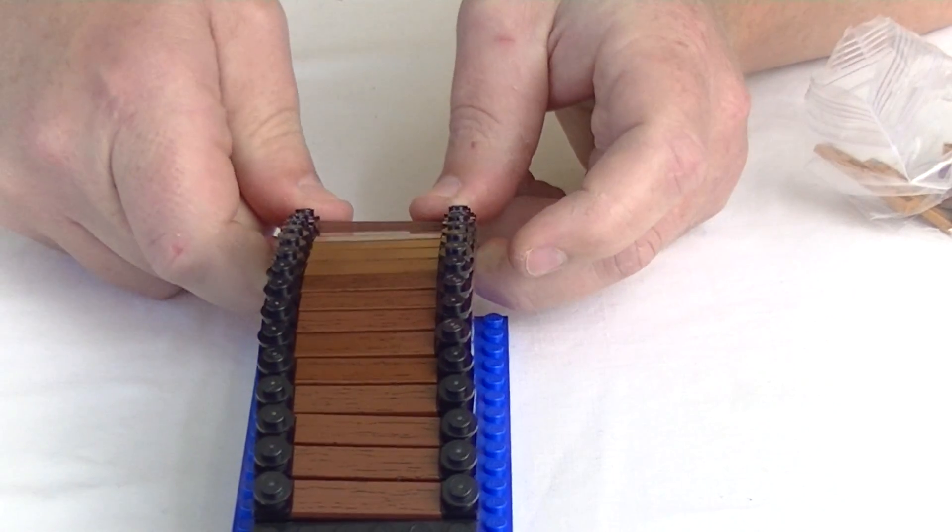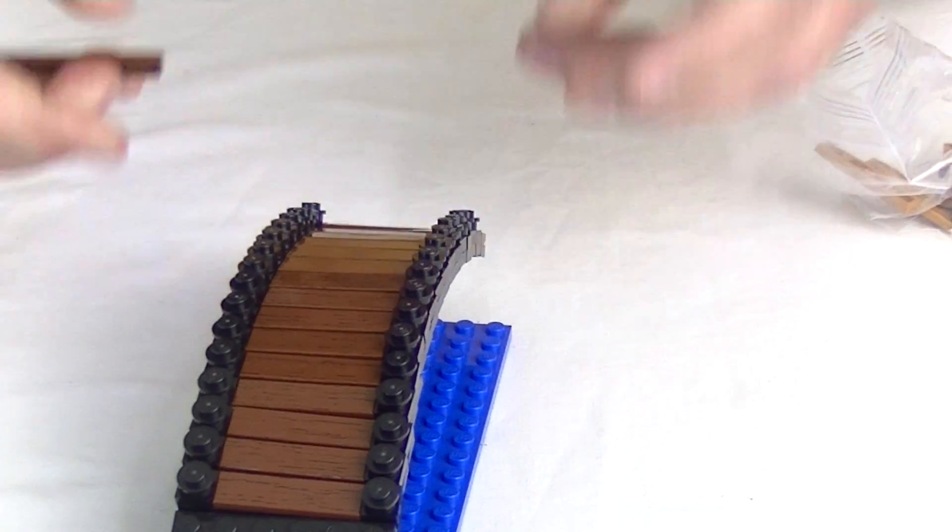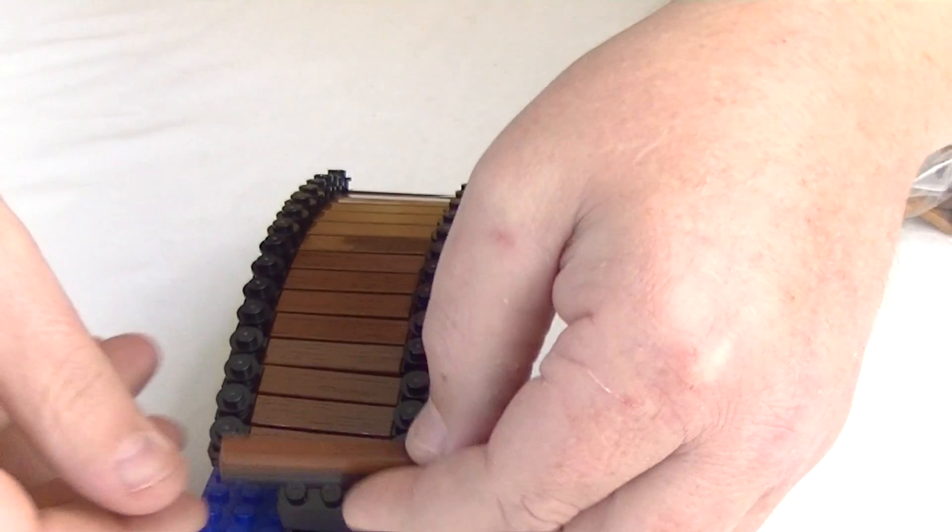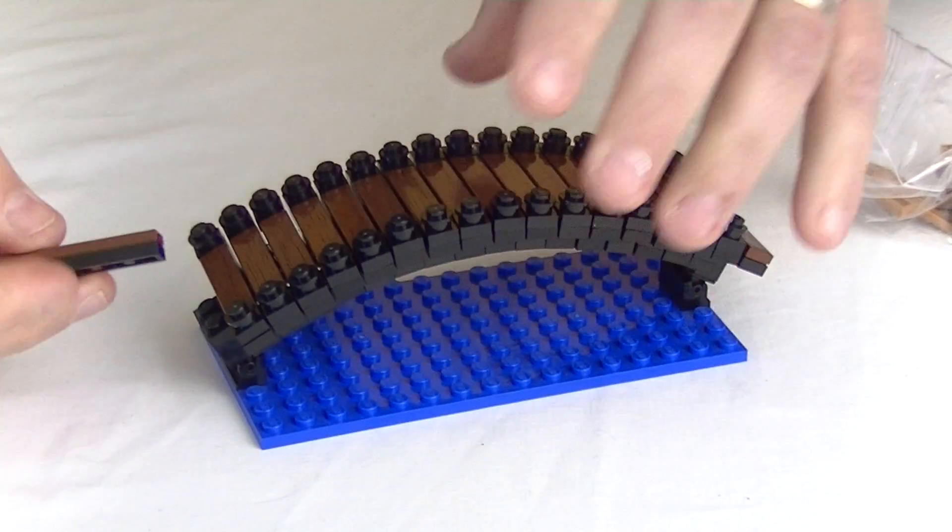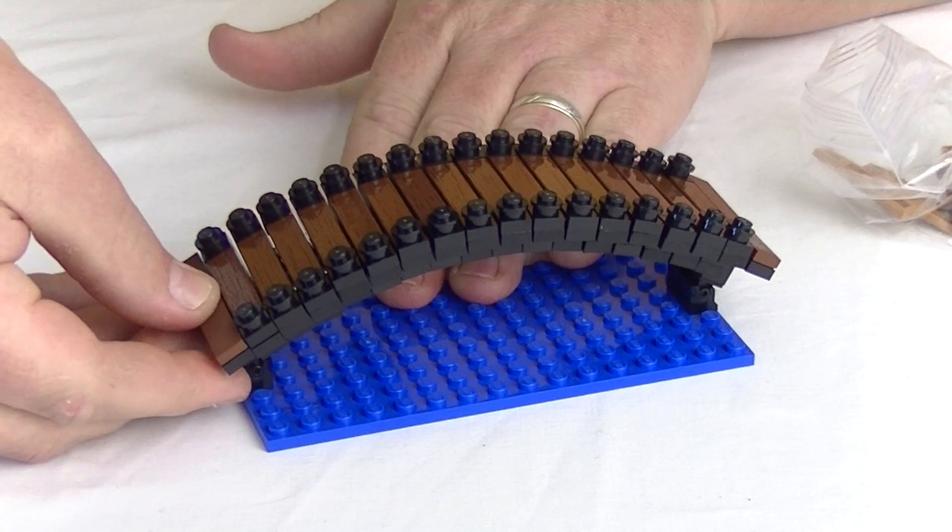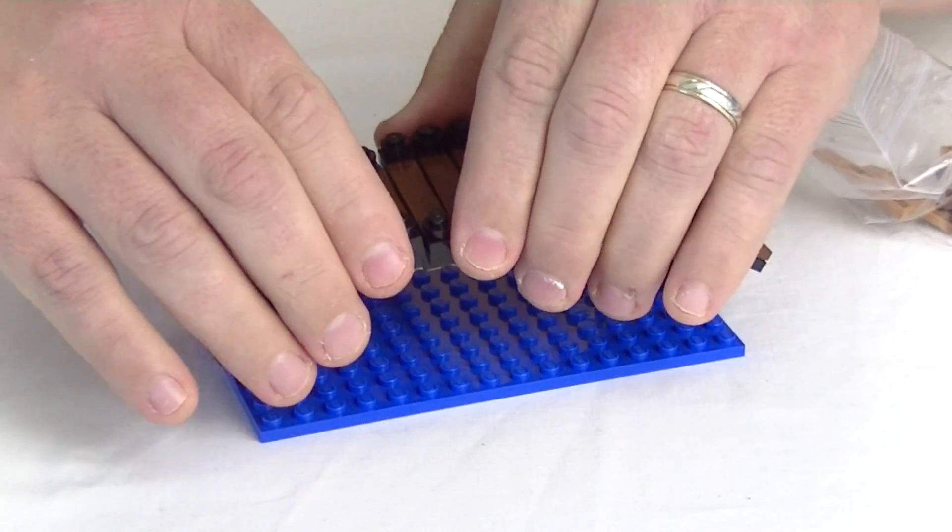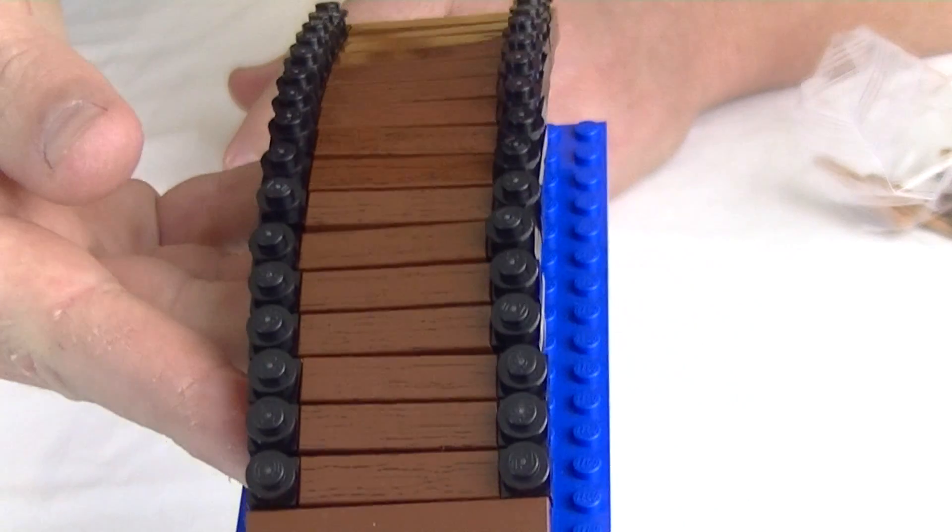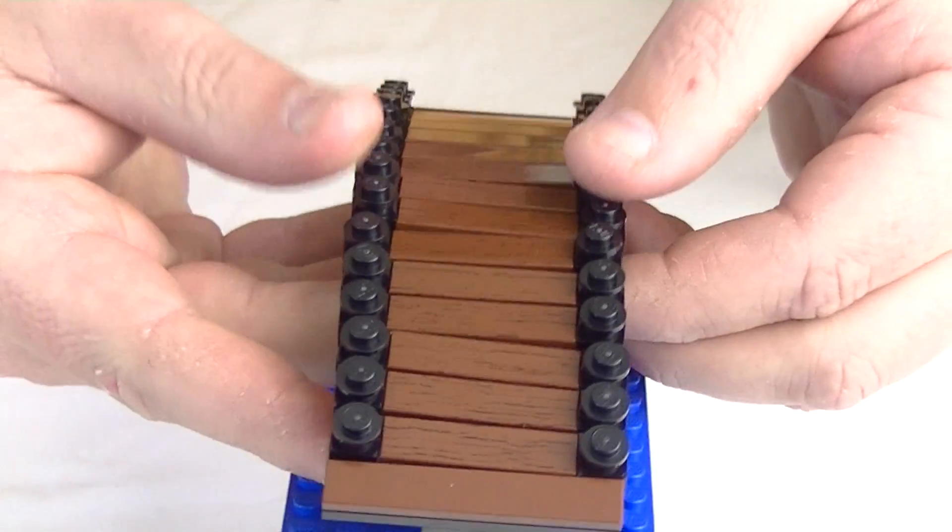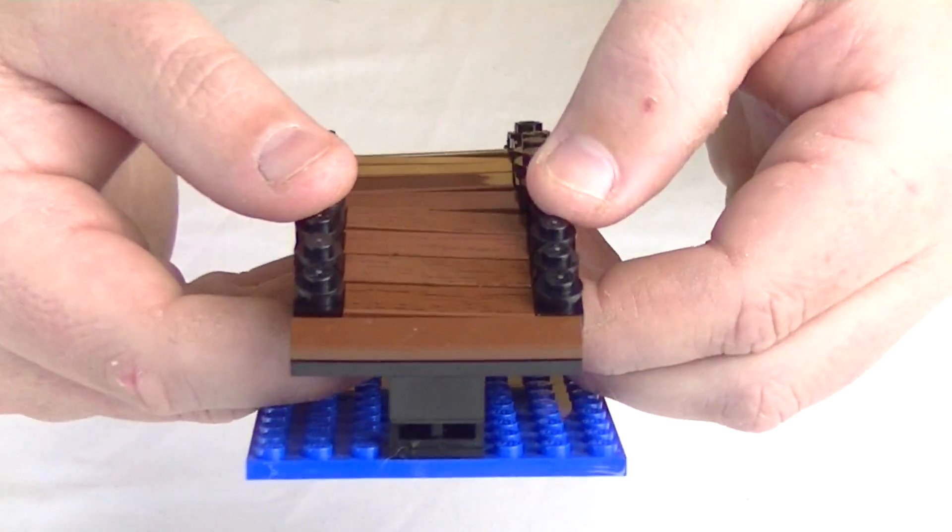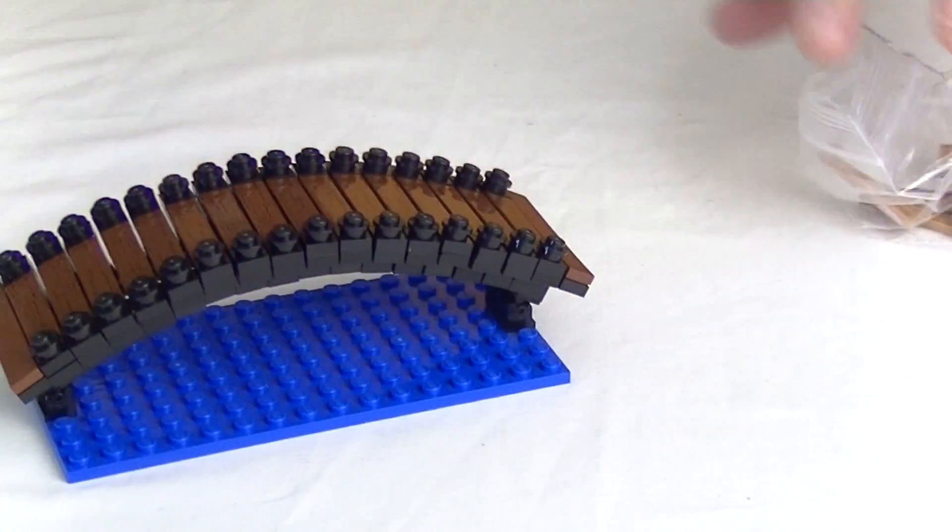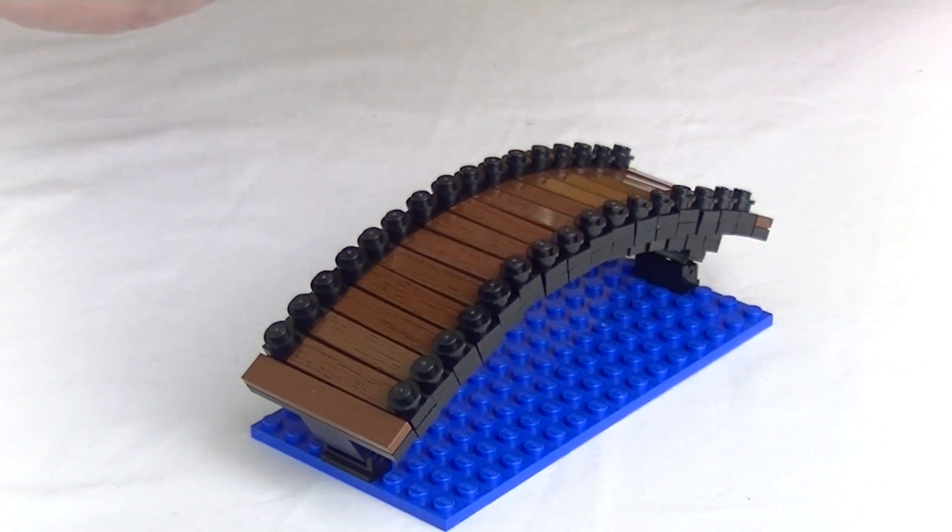On the very end I'm just going to use a 1x6 tile, one on this side and one on that side. And that's actually starting to look very nice. It's still a little bit wonky but we've still got to clip it all together with the handrail and that will help support that.